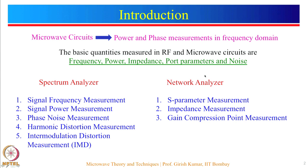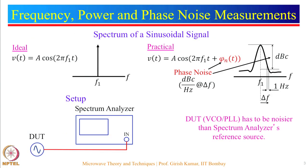Network analyzers are used for S parameter measurements primarily. They can also be used to measure the impedance of a network, which is input or output impedance, and are also used to measure the gain compression point, which is P1dB of a network. Let us see how frequency, power, and phase noise can be measured using a spectrum analyzer.